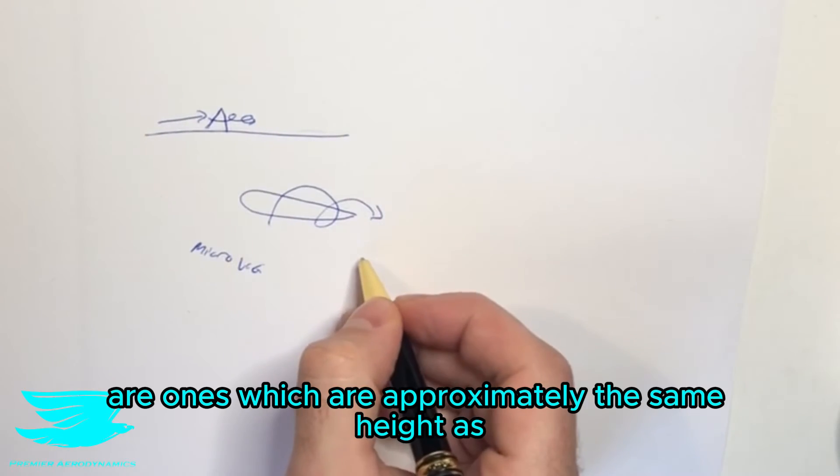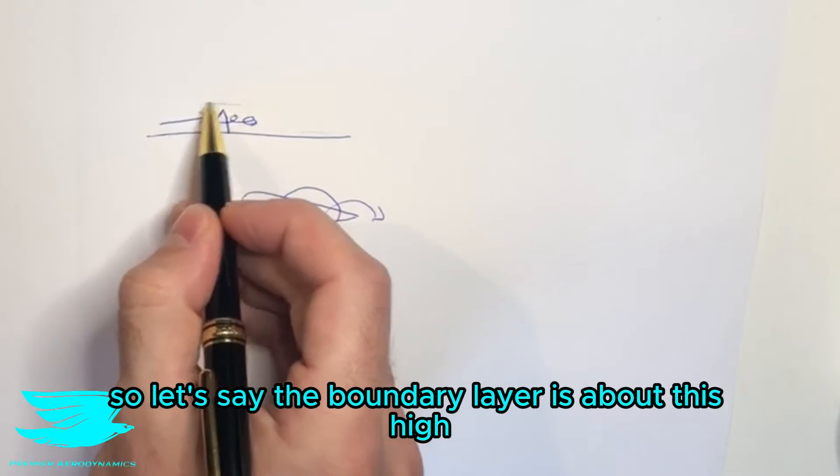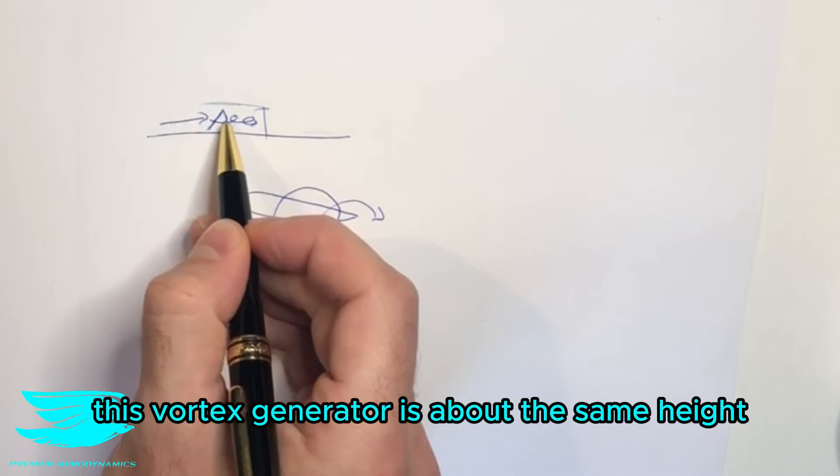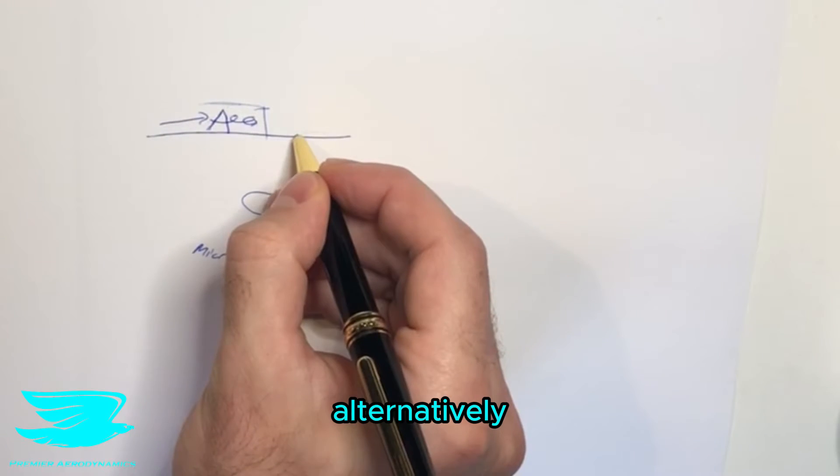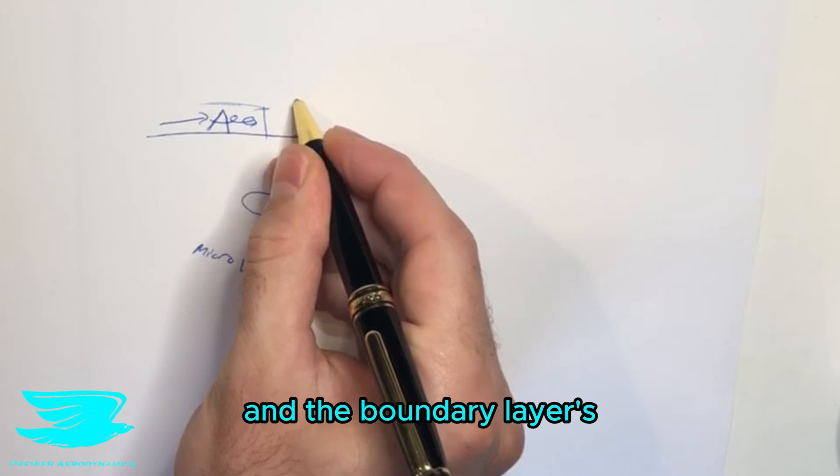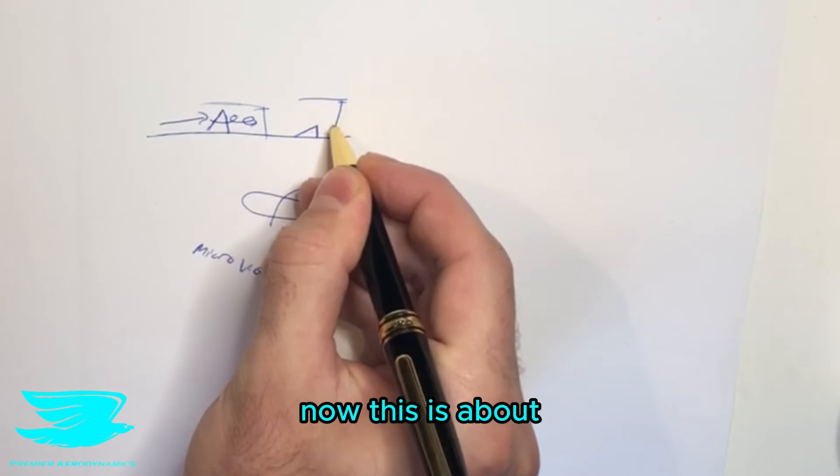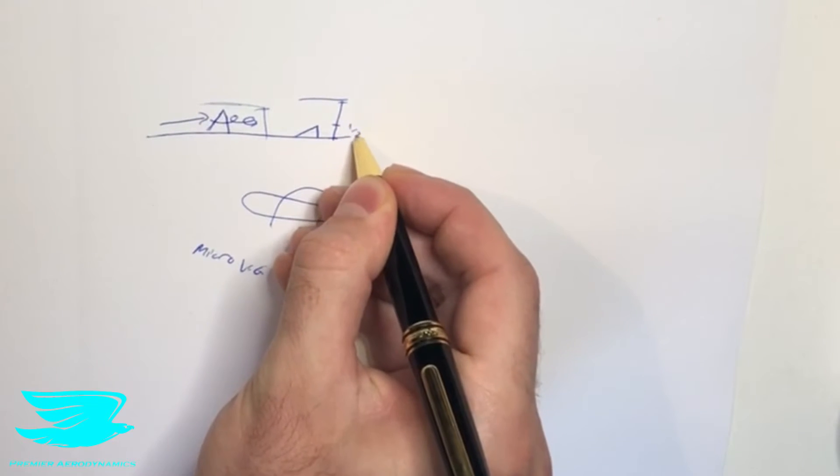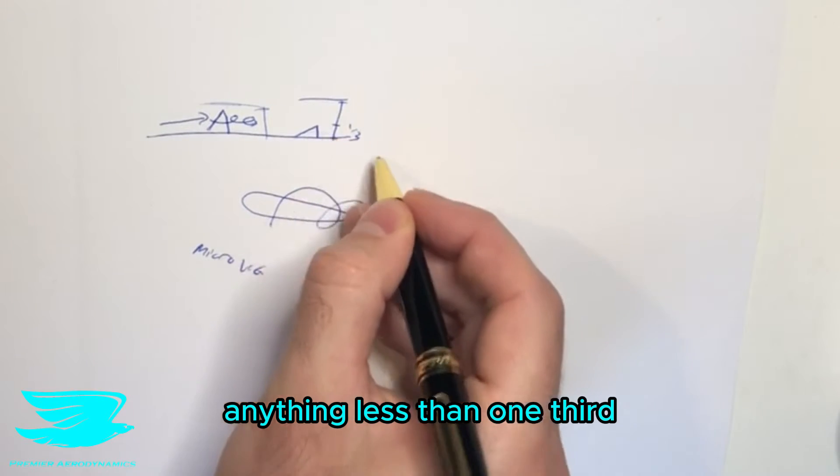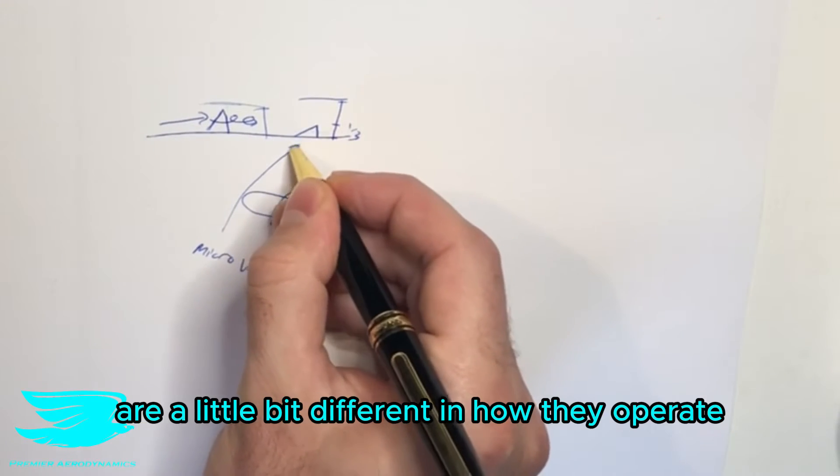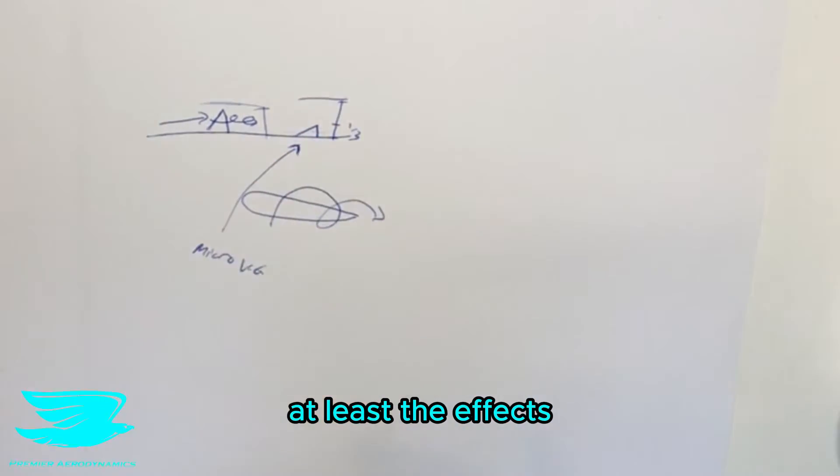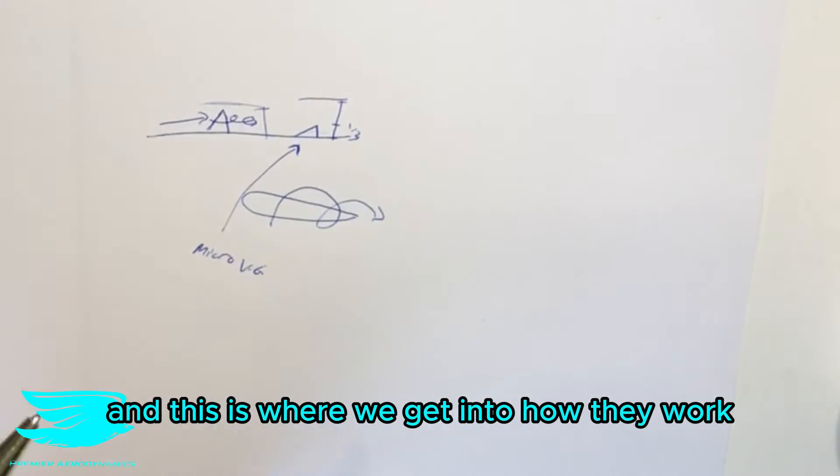And these are usually grouped into two different categories. So regular vortex generators are ones which are approximately the same height as the boundary layer. So let's say the boundary layer is about this high. This vortex generator is about the same height. So this is a regular vortex generator. Alternatively, if I had a vortex generator about this size, and the boundary layer is this height, now this is about one-third, let's say. Anything less than one-third is classified as a micro-vortex generator. And these are a little bit different in how they operate, at least the effects. And this is when we get into how they work.